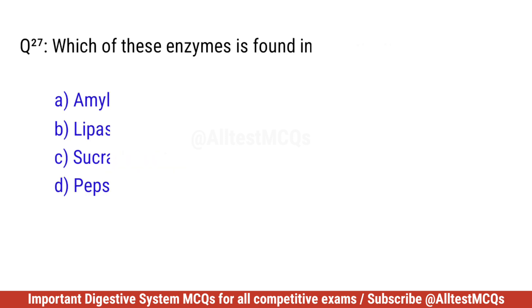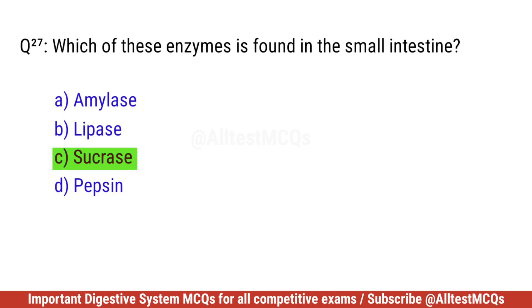Question twenty-seven. Which of these enzymes is found in the small intestine? Correct option is C. Sucrase.